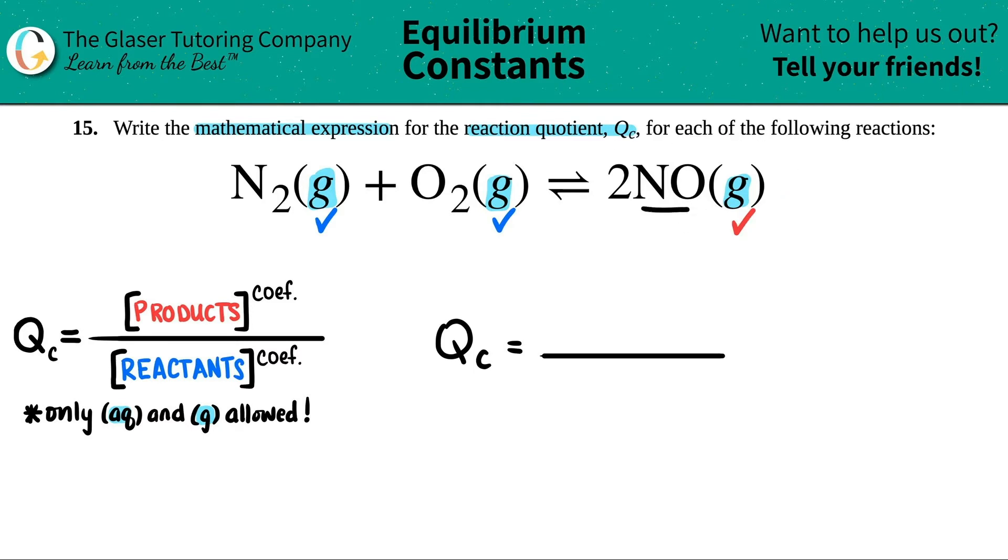So I have NO. And brackets just means that I'm going to take the concentration. So I have the concentration or the molarity of NO. Close that up, but now I have to raise it to the coefficient. Here, I have a 2 in the front. So I have to raise this to the second.